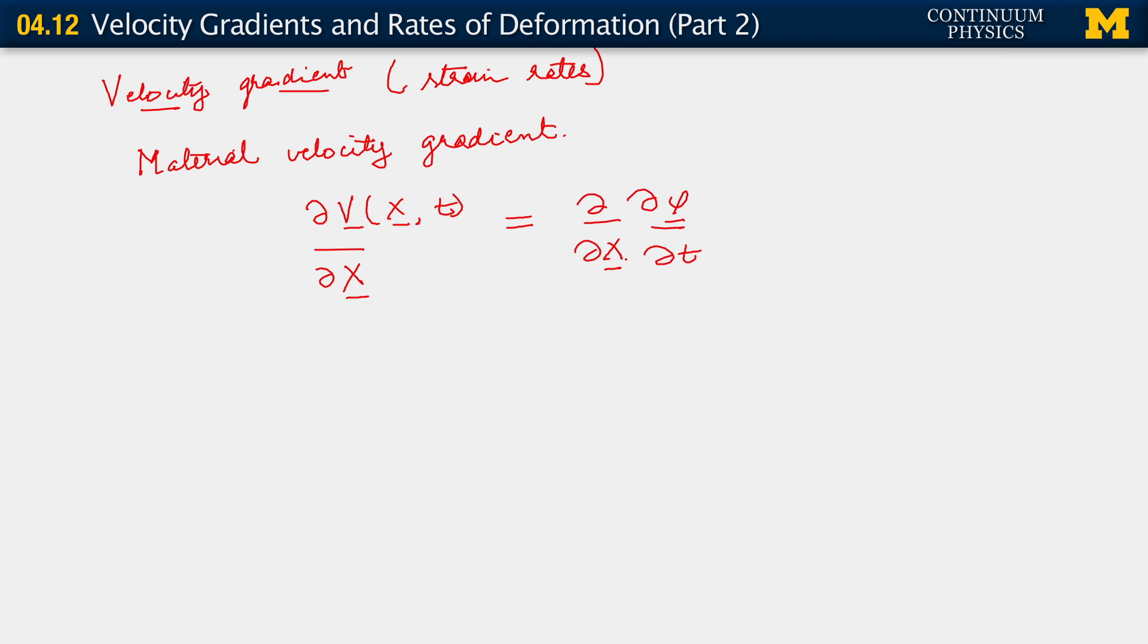Now, if our motion phi is smooth enough, we know that we can interchange the order of those derivatives. And we will assume that indeed phi is smooth enough. What this lets us do is write this as the following. This is if phi is smooth. I won't, right now, define what we mean by smooth. Just imagine that it's a function whose derivatives we can take as much as we need to.